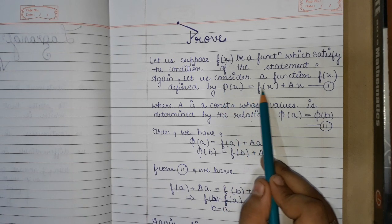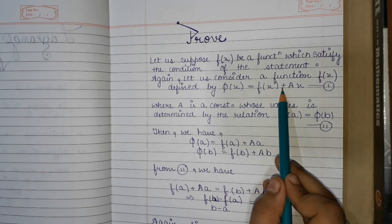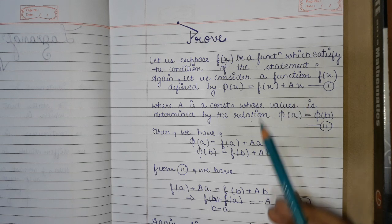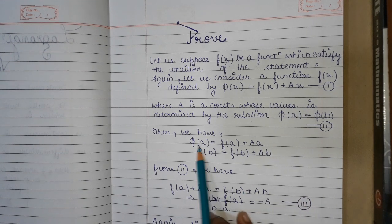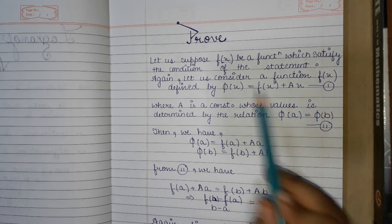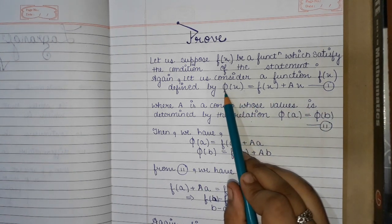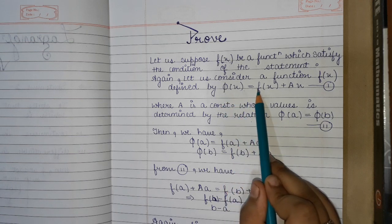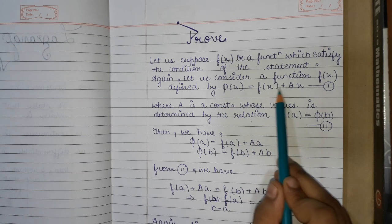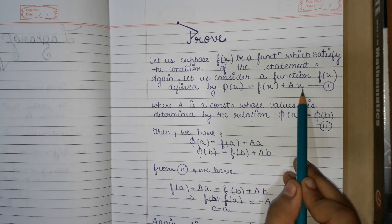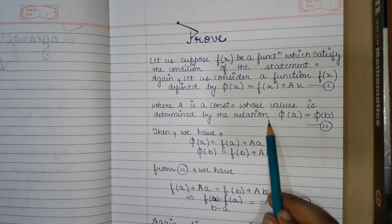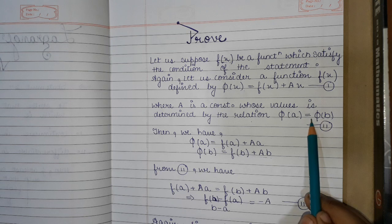We substitute x = a in φ(x), so φ(a) = f(a) + A·a. And if we find φ(b), we get φ(b) = f(b) + A·b. That is, these are the values we obtain for φ(a) and φ(b).